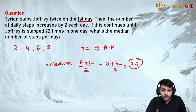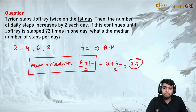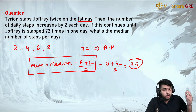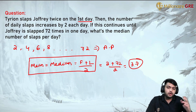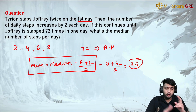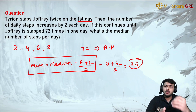In any arithmetic progression, the mean is always equal to its median, which equals (first term + last term) / 2. Note that this property holds only for AP, not for any random sequence.